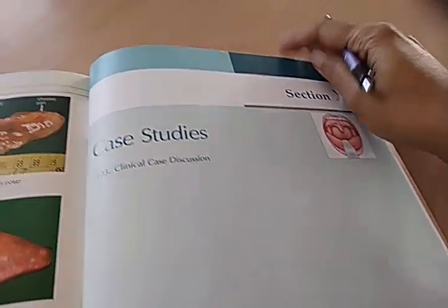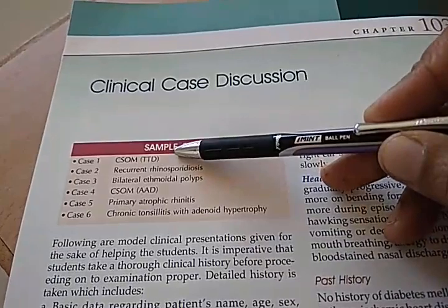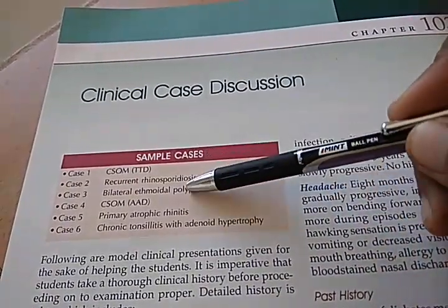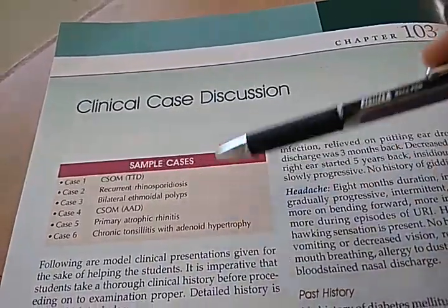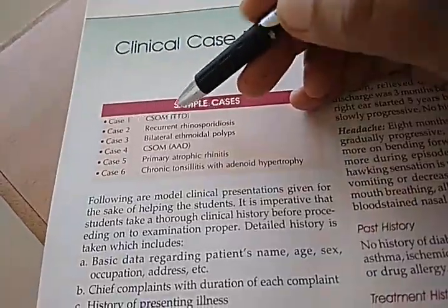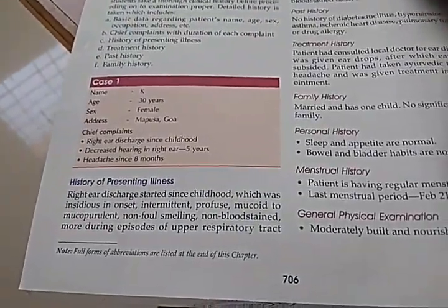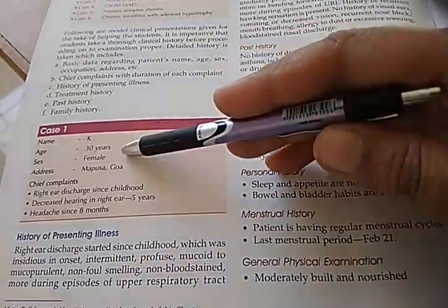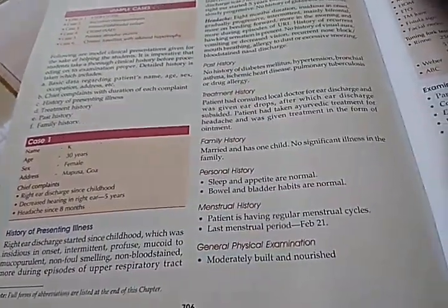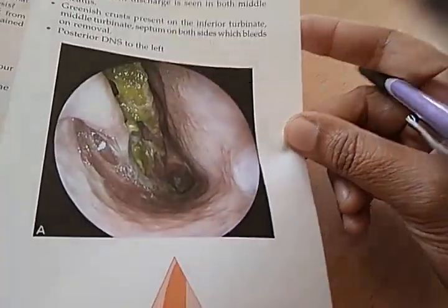The last section — Section 10 on case studies. Let us look at some clinical case discussions. They have given six cases: CSOM with recurrent rhinosporidiosis, bilateral ethmoidal polyp, CSOM tubo-tympanic type of disease, primary atrophic rhinitis, and chronic tonsillitis with adenoid hypertrophy. They tell you the case in detail — this person is a female, married, one child. If you have a case presentation, you can directly do it from here, and they have put photos from the examination as well.